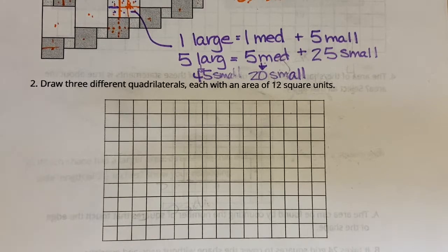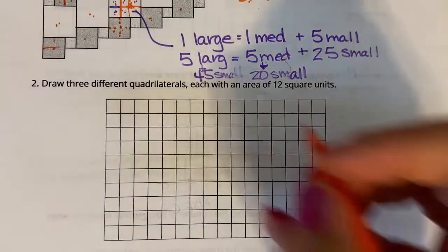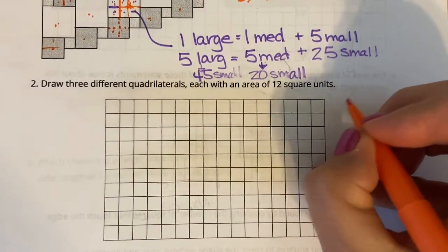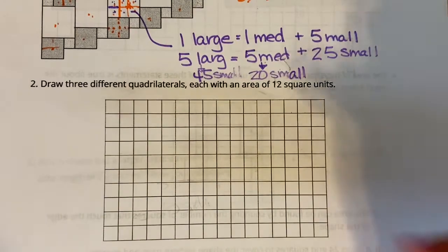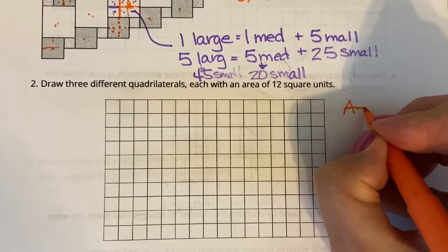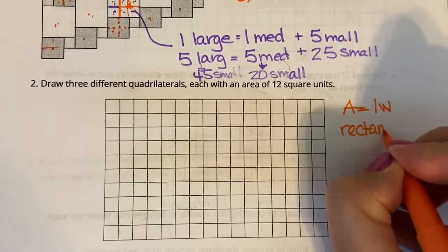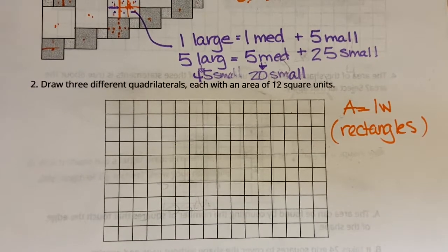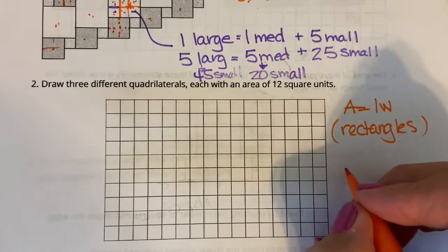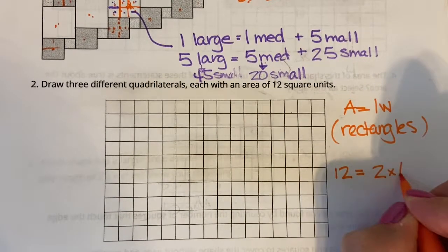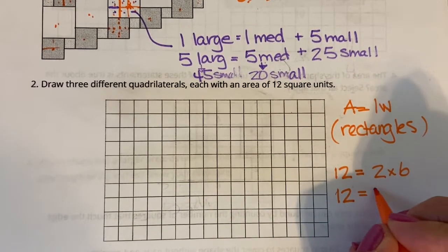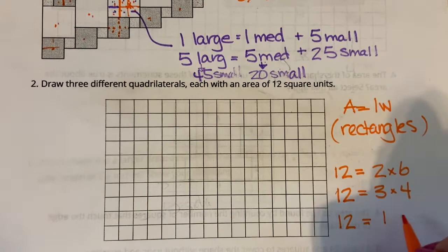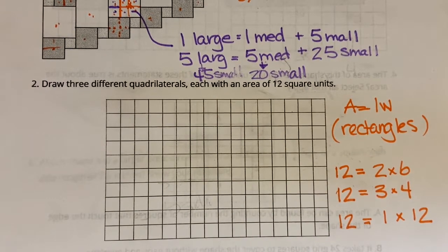All right, let's move on. So this says I've drawn three different quadrilaterals, each with an area of 12 square units. A quadrilateral — think of a rectangle or a square — area is base times height, or length times width. The area is going to be length times width because we're using rectangles. So what times what equals 12? 12 equals 2 times 6, 12 equals 3 times 4, and 12 equals 1 times 12.